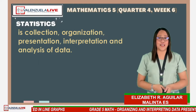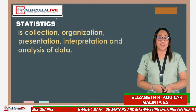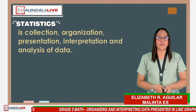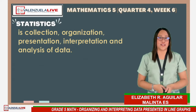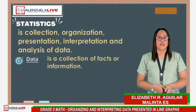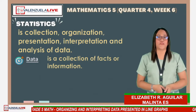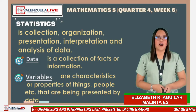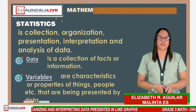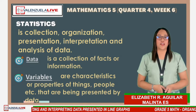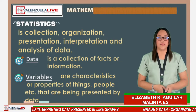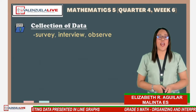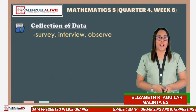Statistics is the collection, organization, presentation, and analysis of data. There are two key terms in statistics. First, data — a collection of facts or information. Then we have variables — characteristics or properties of things, people, etc., that are being represented by data. In the collection of data, we have survey, interview, and observation.